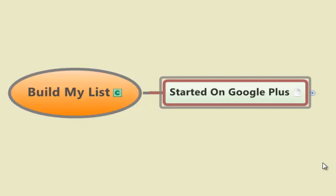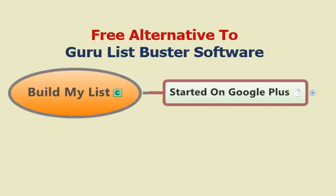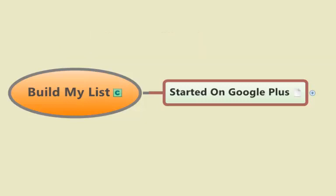Hey Fiverr fans, thanks for checking out my gig. In this gig, what I want to do is show you how to build a list, and I'll show you how I uncovered this method because I want to be completely transparent with you. Basically, what I'm offering you is a free alternative to something called the Guru List Buster — it's actually a low-cost alternative, because you don't have to pay the $21 fee to get this feature. I'm going to give it to you for five bucks.